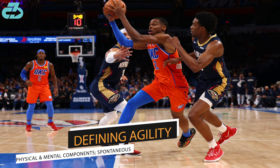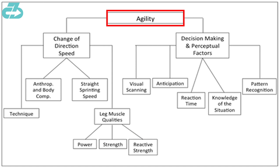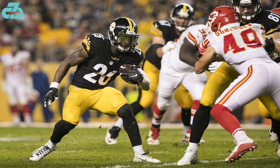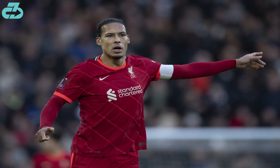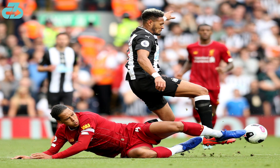However, agility is one level above. Of course, it involves those physical aspects of change of direction and change of speed, but it also involves the mental component of having to make decisions — that perceived process action where you have to first decipher and read what's going on around you, anticipate, then process those things, and then act and make the right decisions as well.